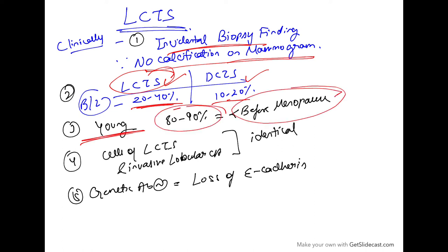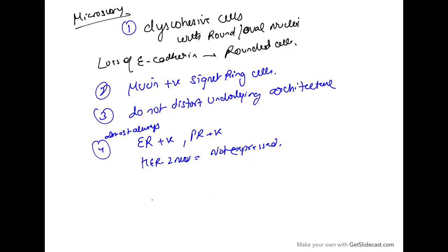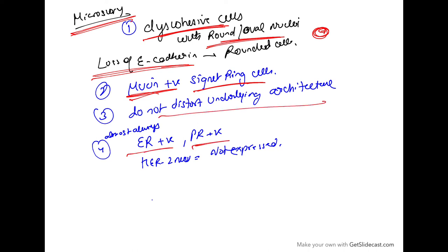The cells of lobular carcinoma in situ and invasive lobular carcinoma are identical. The genetic abnormality is loss of E-cadherin, which causes discohesive cells microscopically. There are round and oval nuclei, and mucin-positive signet ring cells. The cells are rounded because of loss of E-cadherin, do not distort underlying architecture, and are ER positive, PR positive, and HER2 is not expressed.